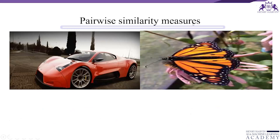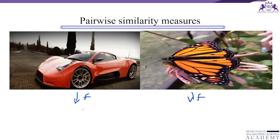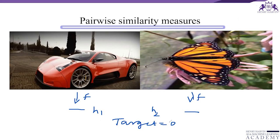For negative samples — where both images are different — we also pass them through F to obtain H1 and H2. The prediction should be close to 0 because the inputs are different. We then do the same as before: compute the gradient from the loss through the dense layers and convolutional layers to update the model parameters. This is how the pairwise similarity training basically works.